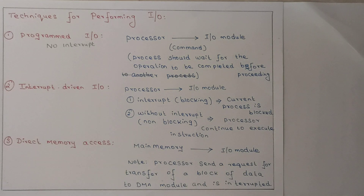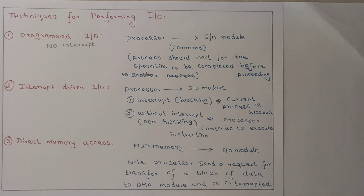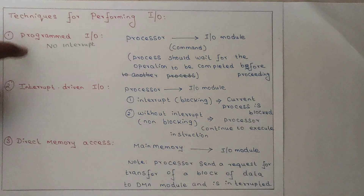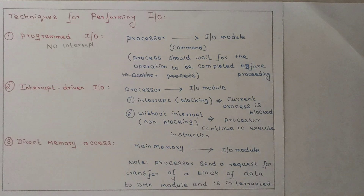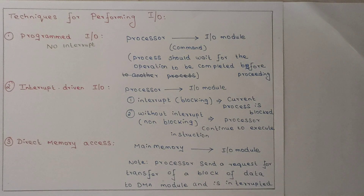In both these two techniques — programmed I/O and interrupt-driven I/O — the processor sends the request to the input-output module. From that, it will take the data and store it in main memory, as all processes are executed in main memory. For the input-output operation to memory, in both concepts, we need the processor. With the help of the processor, the data transfer from input-output devices to memory takes place.